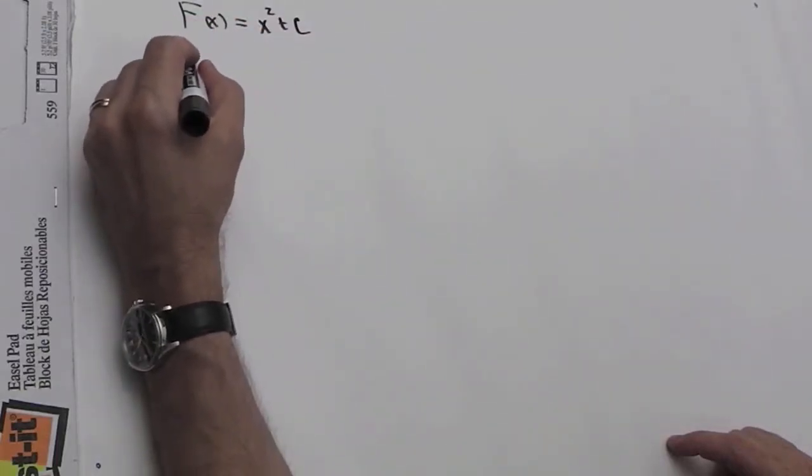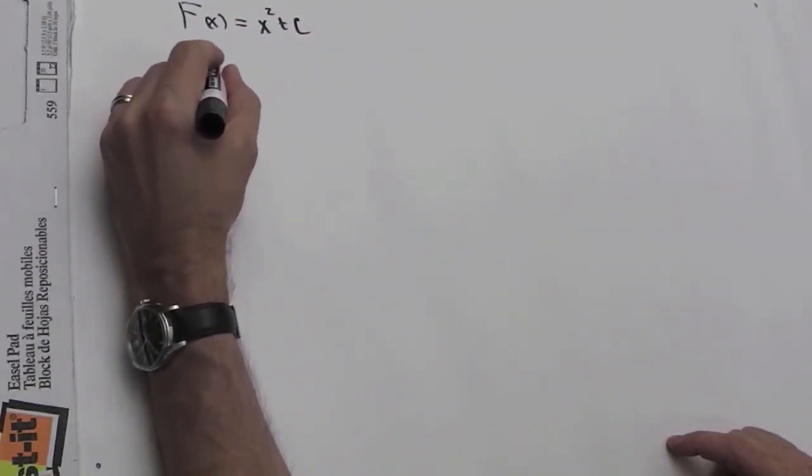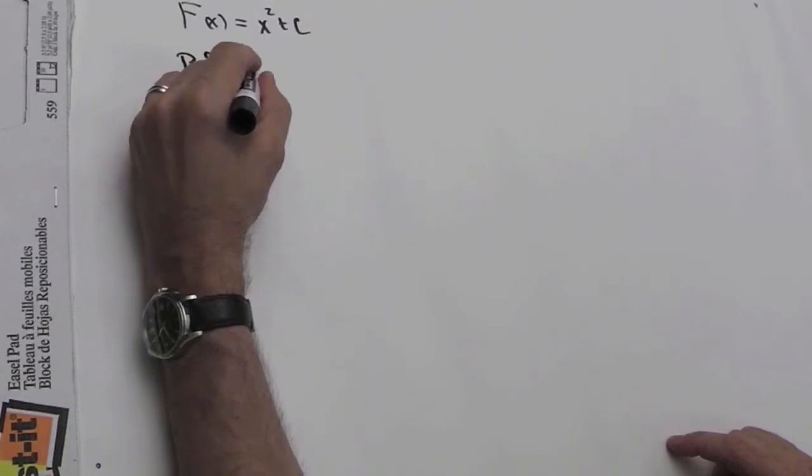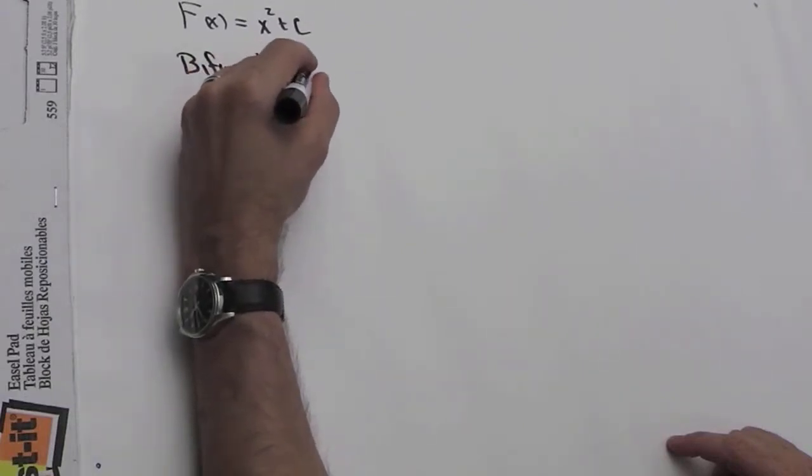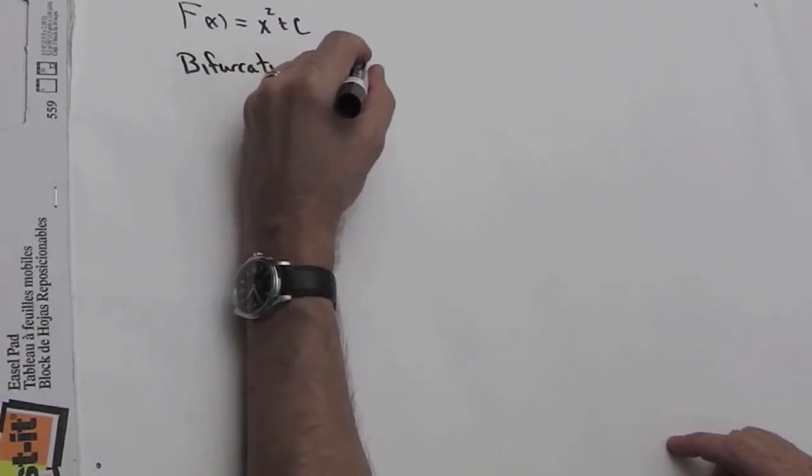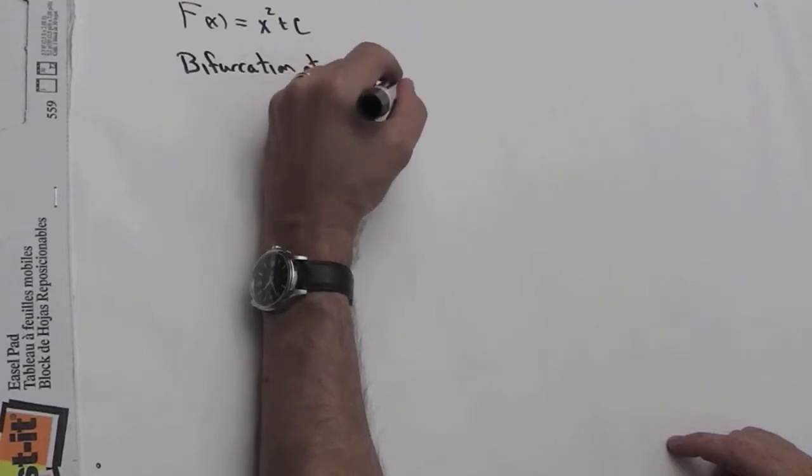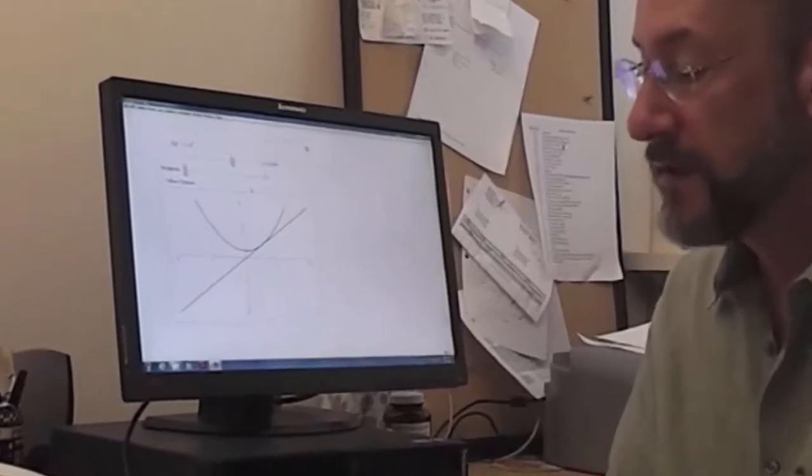And we found that there was a bifurcation at c equals one quarter. And that bifurcation was a place where the two fixed points coalesced into one and then that one disappeared. Let's take a look at the computer and see how that happened again.